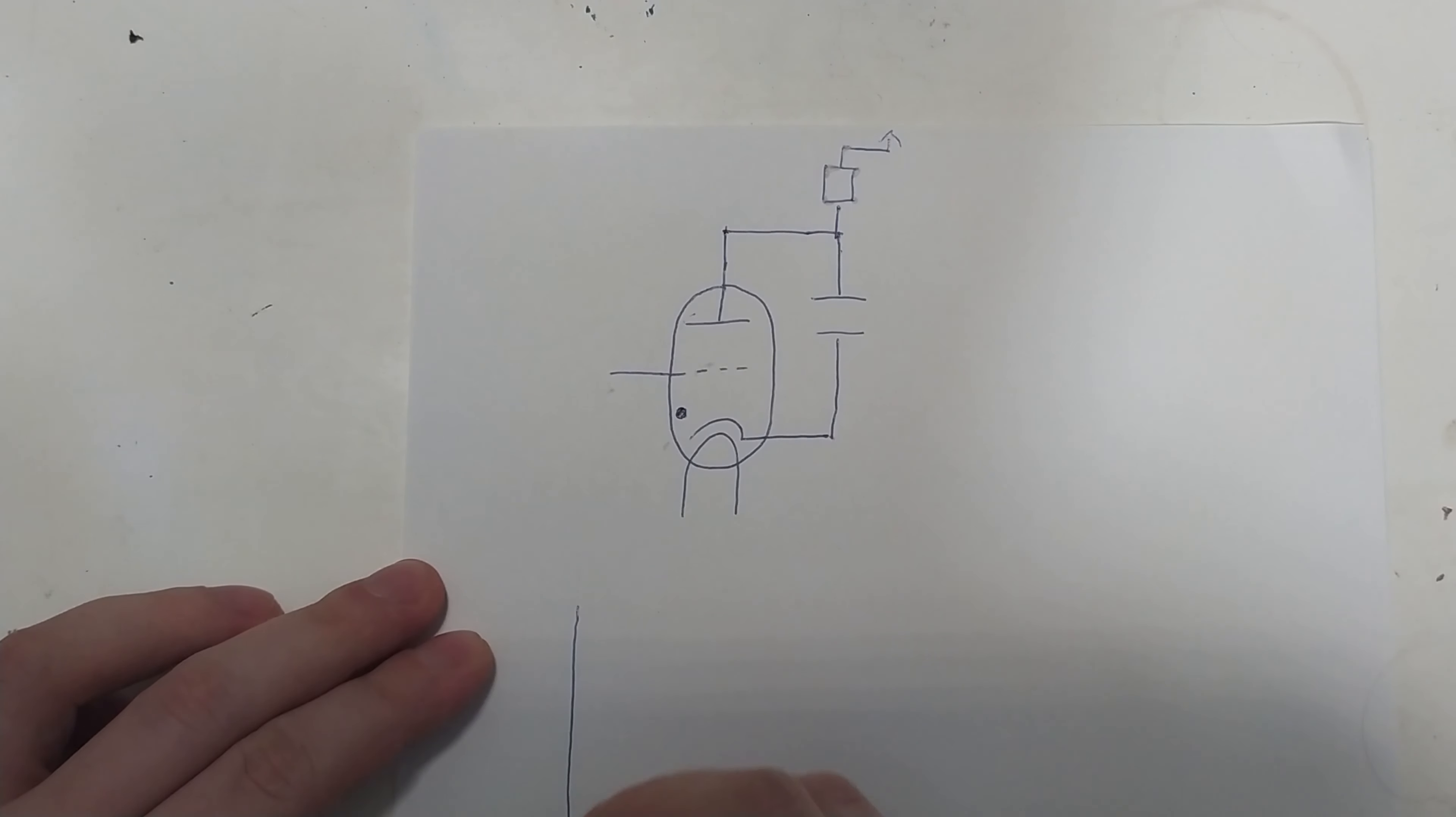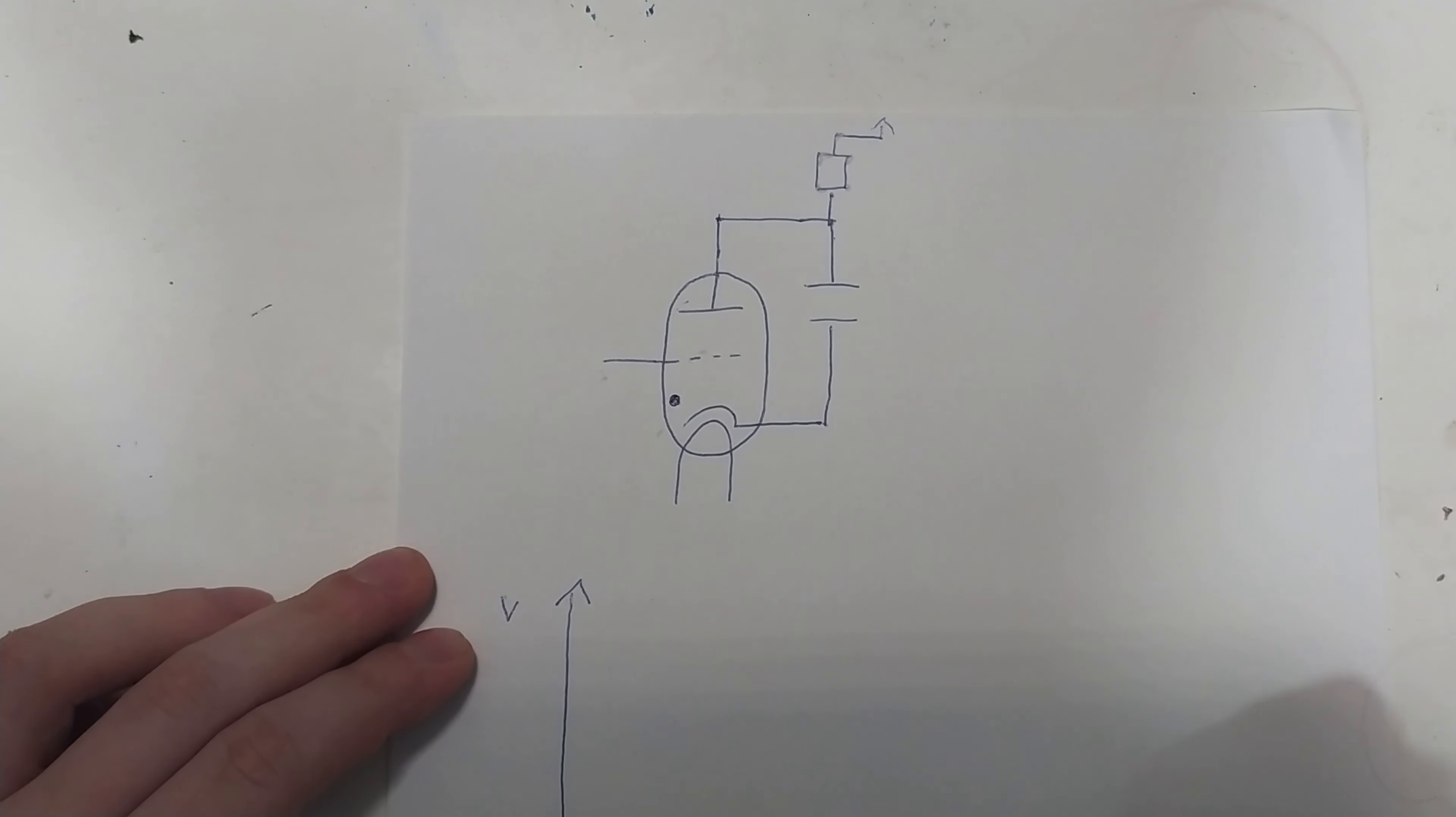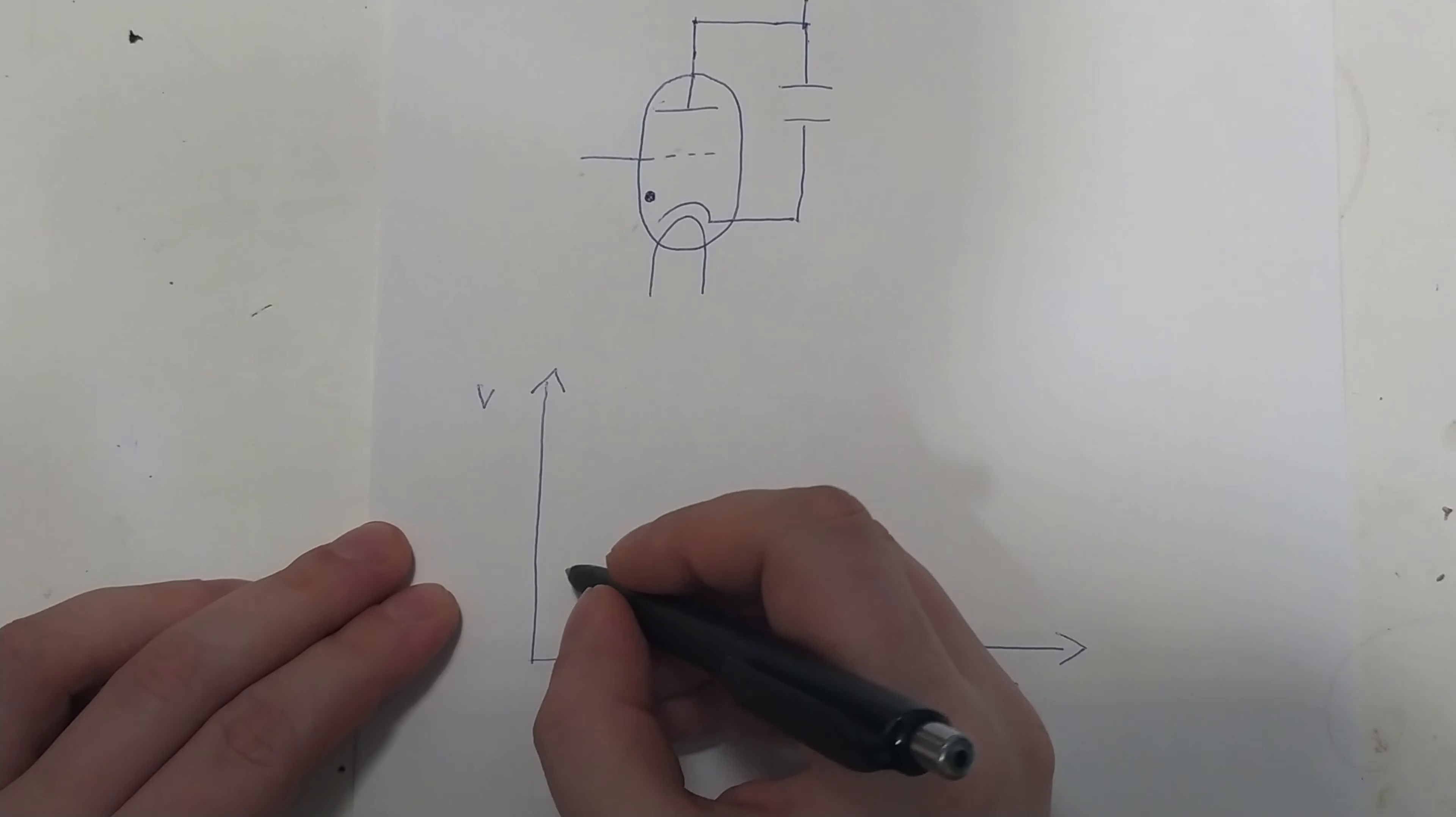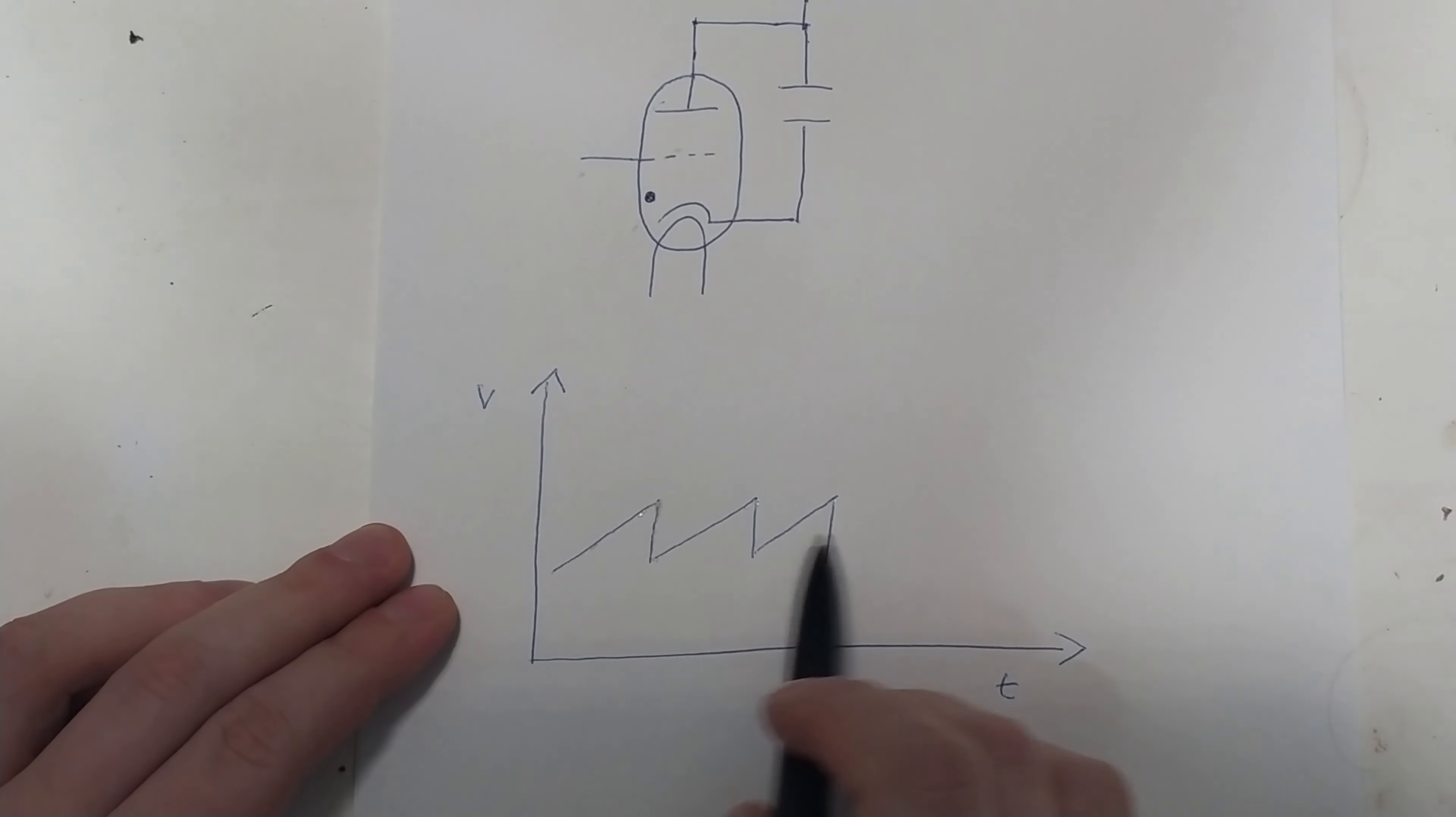If we draw this in terms of a waveform, that will look a little like this. We have our voltage here and we have time here. This will look like this: voltage will slowly rise until the tube fires, suddenly go down to below the voltage where this can be sustained, then will just slowly charge up again. And this way we get the sawtooth that we wanted.